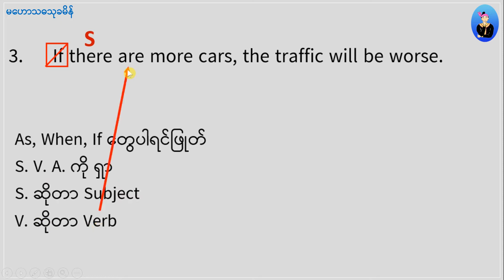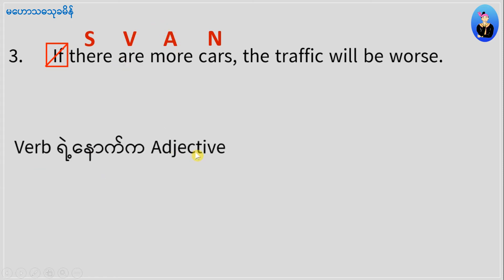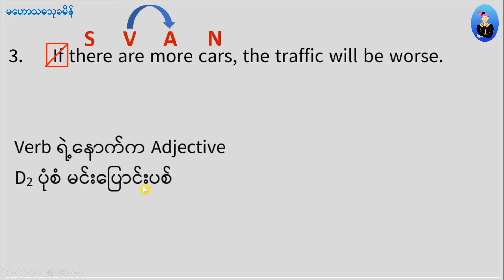If you have a noun, you can use a countable noun. The adjective has three degrees: D1, D2, D3 — that is, positive degree, comparative degree, and superlative degree. The comparative form is D2.